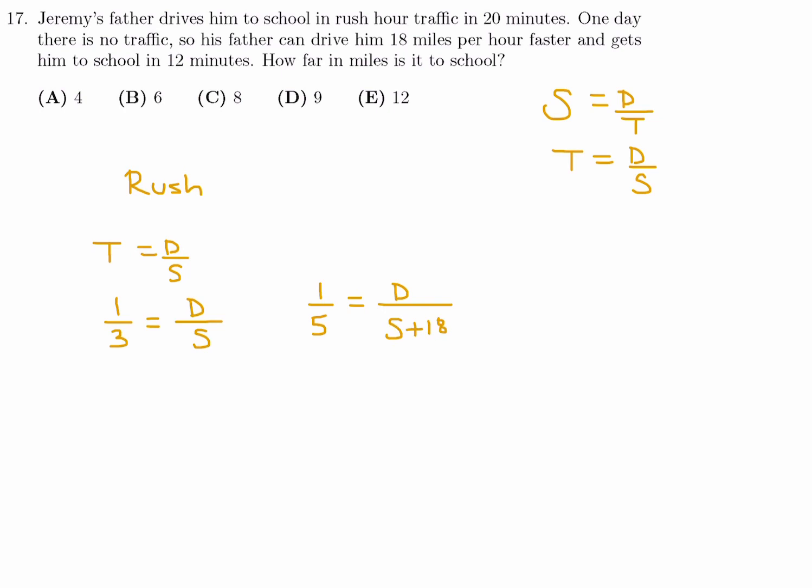I've got two variables, two equations, I can solve this. This one cross-multiply, you get 3D is equal to S. This one cross-multiply, and you get S plus 18 is equal to 5D. And we're solving for D, so let's substitute for S, 3D plus 18 is equal to 5D. And therefore, 18 is equal to 2D, and therefore, D is equal to 9. So number 17, the answer is D.